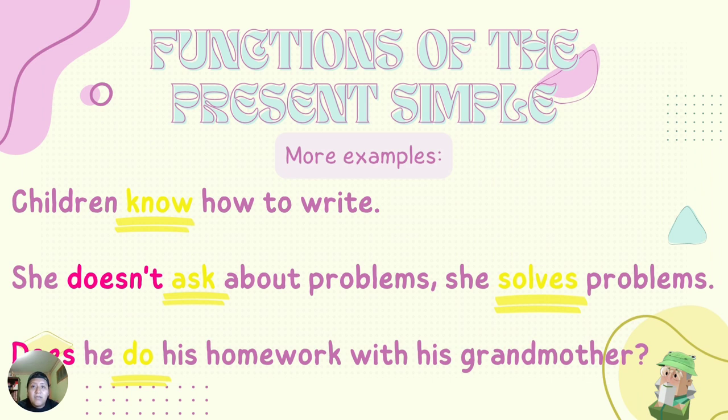Does he do his homework with his grandmother? This is an interrogative sentence. 'Do' is the verb in present simple.